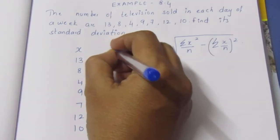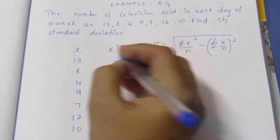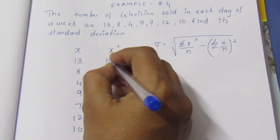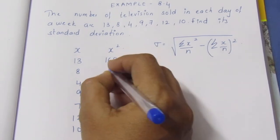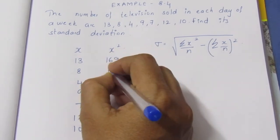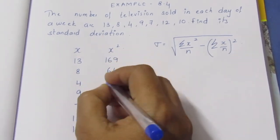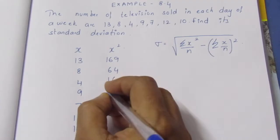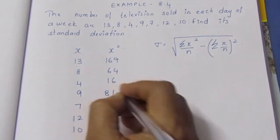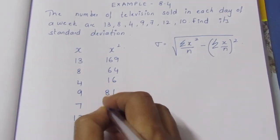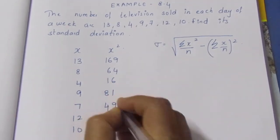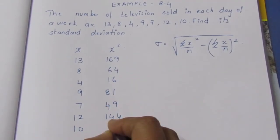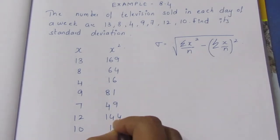Now we calculate x². 13 squared is 169, 8 squared is 64, 4 squared is 16, 9 squared is 81, 7 squared is 49, 12 squared is 144, 10 squared is 100.